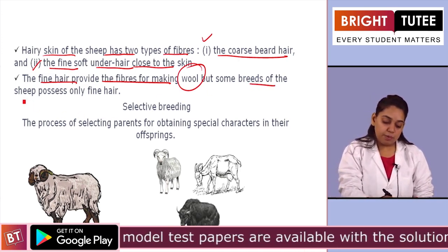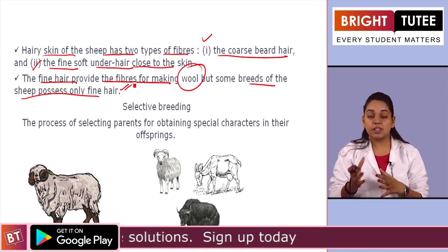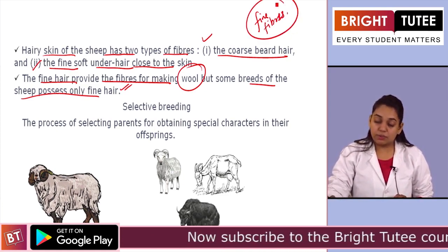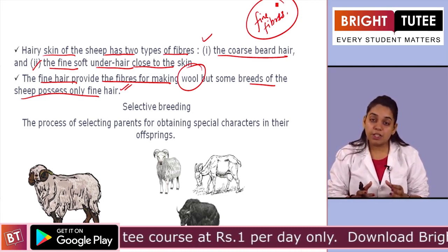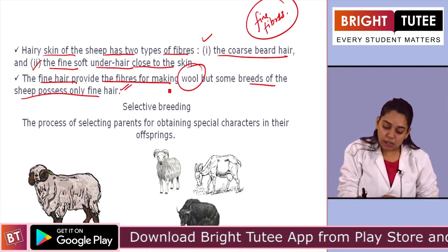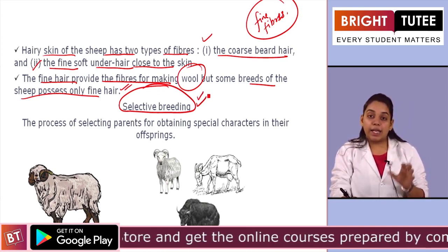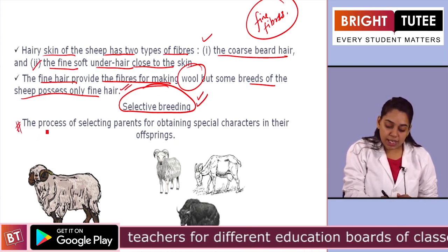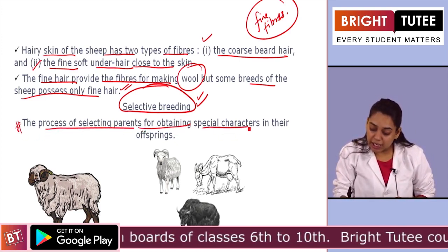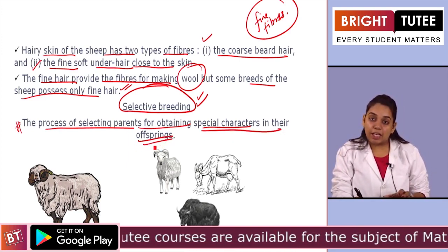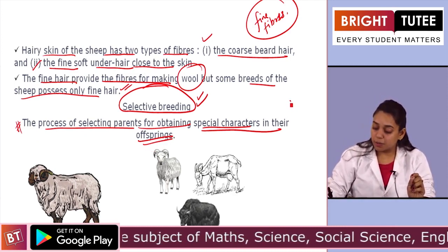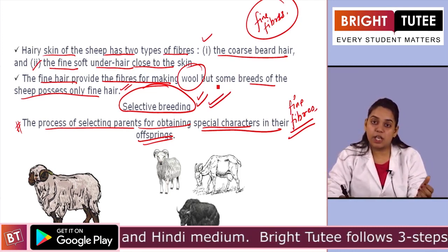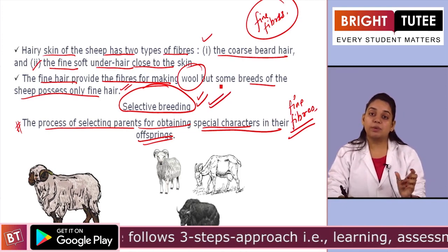Some breeds of sheep possess only fine hair. There are certain breeds of sheep that only yield fine fibers, and we select these animals that only yield soft fibers for obtaining soft wool. This process is called selective breeding — the process of selecting parents for obtaining special characters in their offspring. We select the parents of such animals that only have fine characteristics of producing fine fibers, so we obtain only those breeds or species that will give us fine wool.